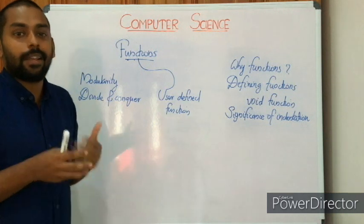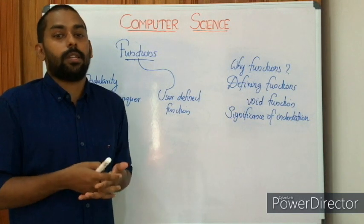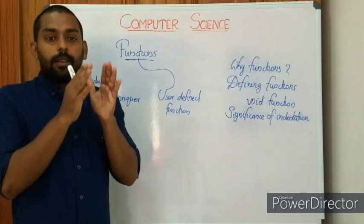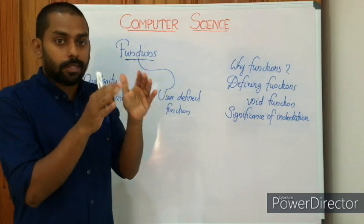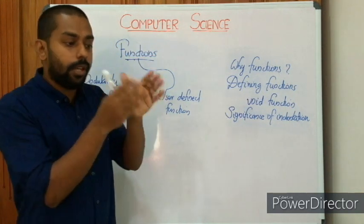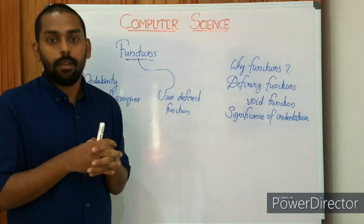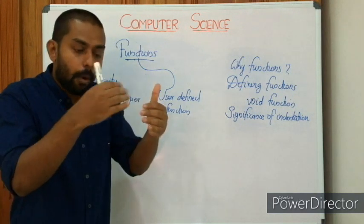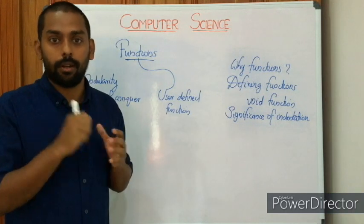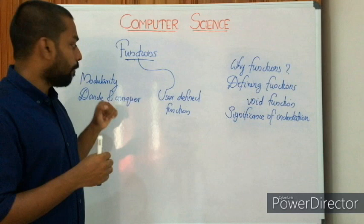A real-life example: consider our Plus 2 textbook, Computer Science with Python, as the main problem. We solve it by dividing it into units, each unit into chapters, each chapter into topics, and each topic into sub-topics. The smallest unit is easy to understand and learn — that is modularity in action.